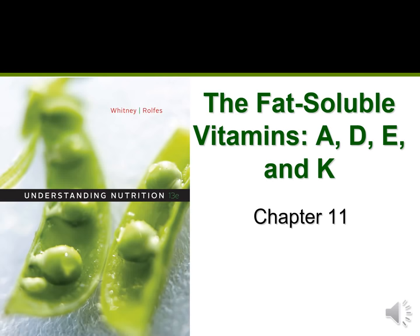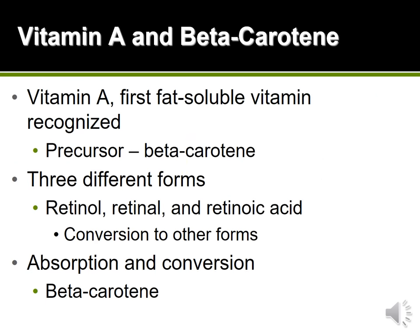Chapter 11 is going to be about the fat soluble vitamins. The first fat soluble vitamin is vitamin A. Vitamin A has lots of different forms. We have three active forms of vitamin A which we call retinol esters: retinol, retinal, and retinoic acid. And then we have a precursor of vitamin A which is called beta-carotene.